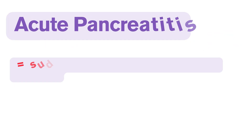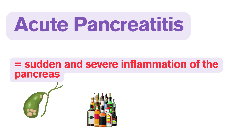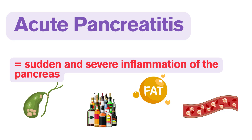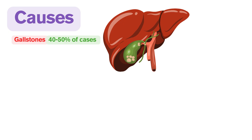Acute pancreatitis refers to a sudden and severe inflammation of the pancreas. It is caused by a variety of factors such as migrated gallstones, alcohol consumption, hypertriglyceridemia, elevated calcium levels, and so on. The most common causes are gallstones, responsible for approximately 40 to 50 percent of cases, and excessive alcohol consumption, responsible for approximately 25 to 35 percent of cases.